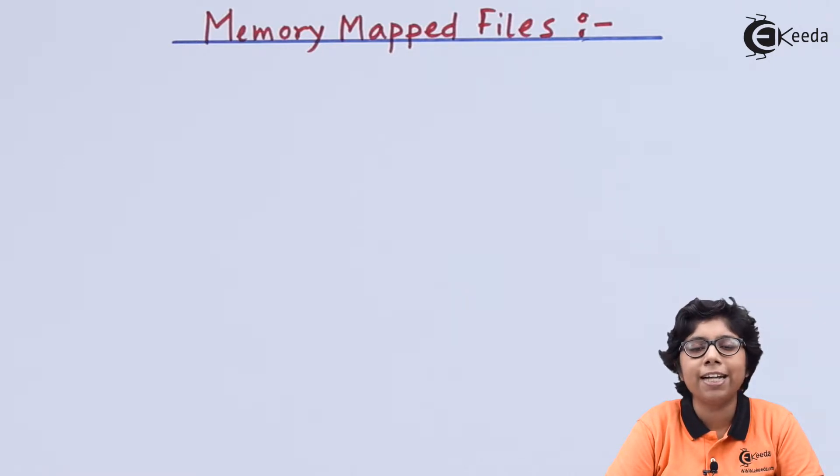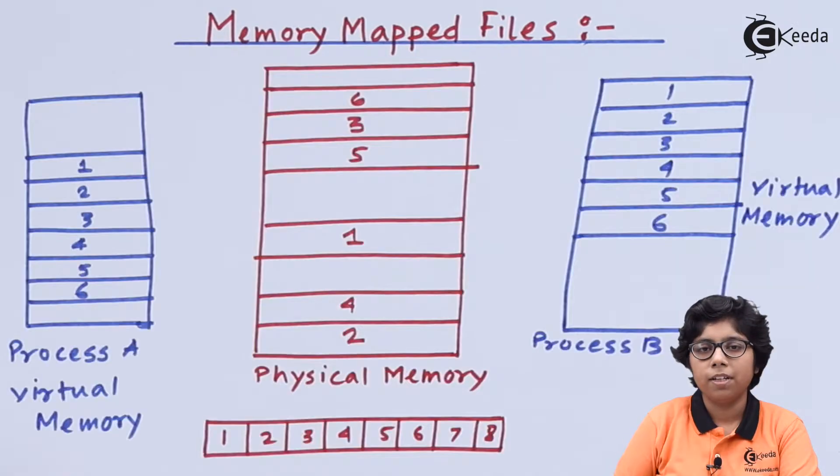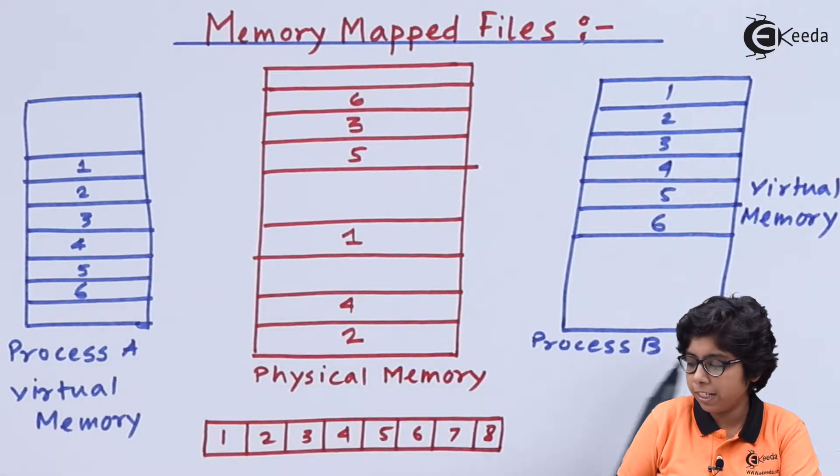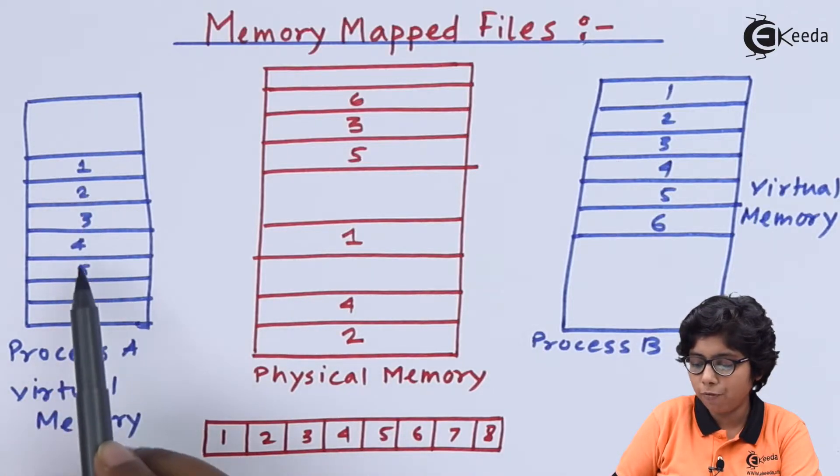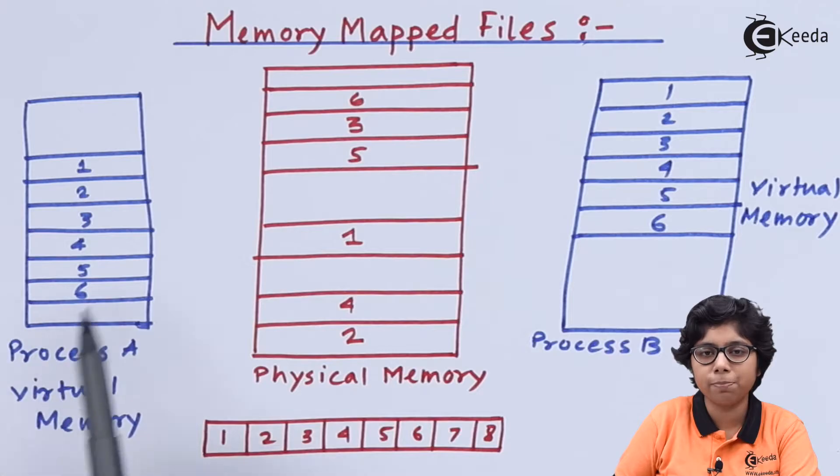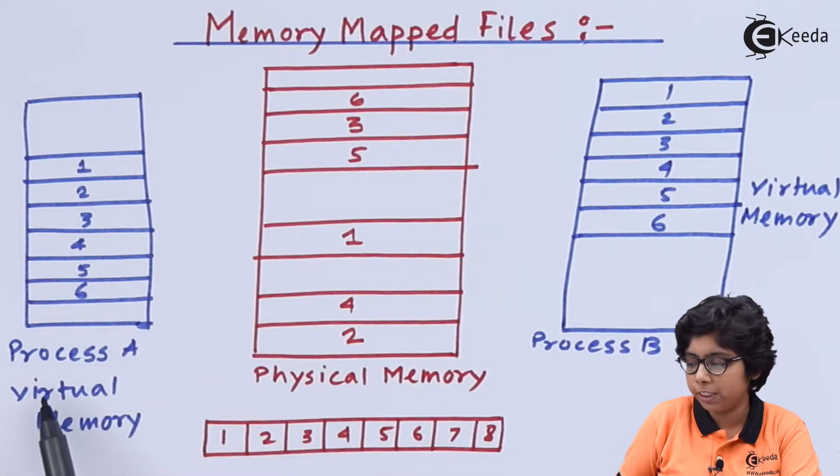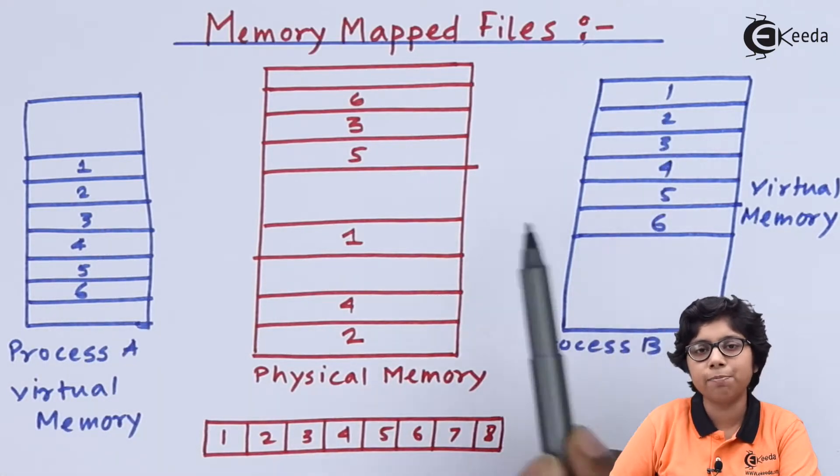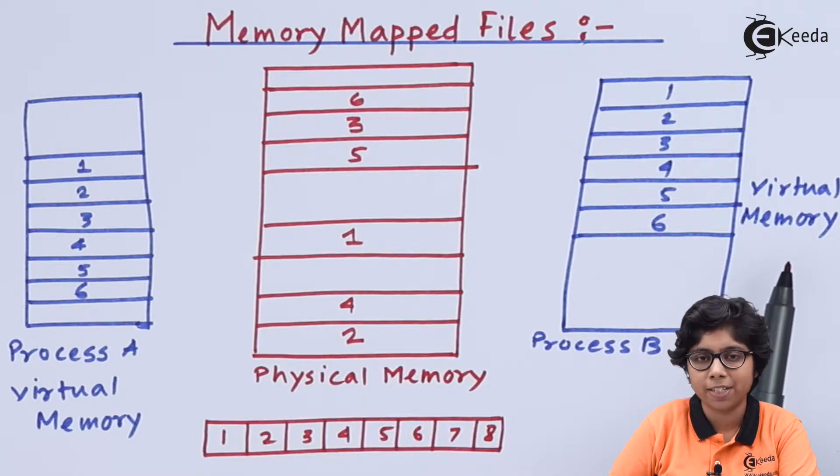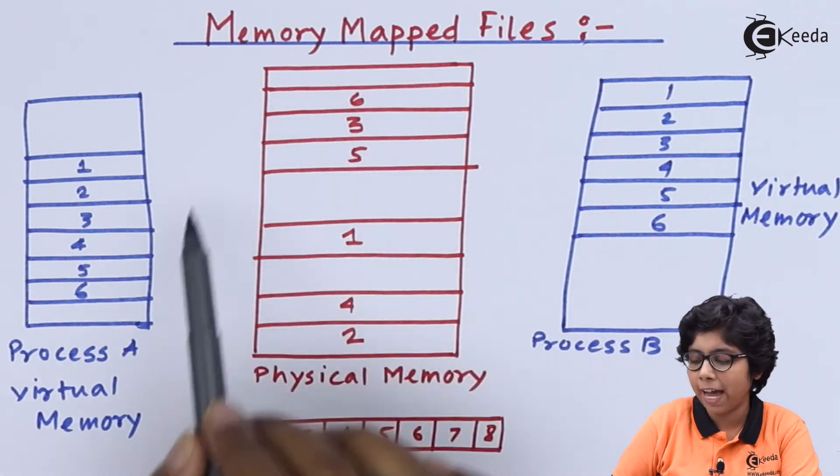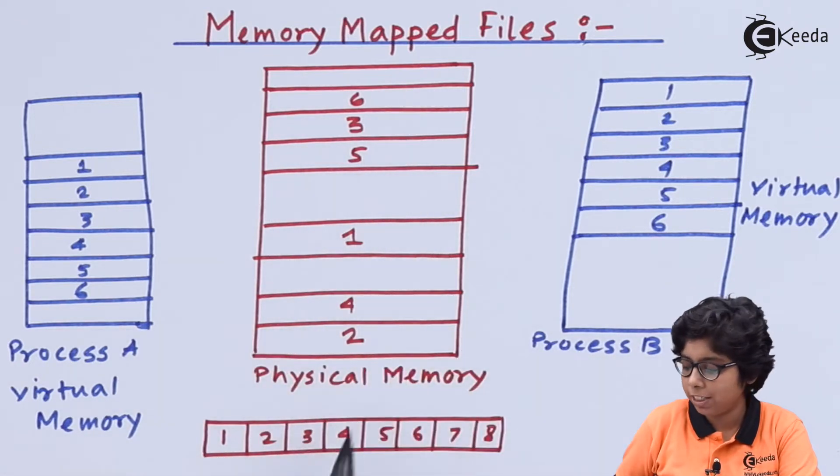Now we will see a diagram of how this mapping process is actually mapped to the physical address space. Here you can see that two processes A and B have their virtual memory spaces where the pages 1, 2, 3, 4, 5, 6 are the own copies of process A, and in the other location is process B's virtual memory address space. Both address spaces are mapping to the actual physical pages which are numbered and indexed.